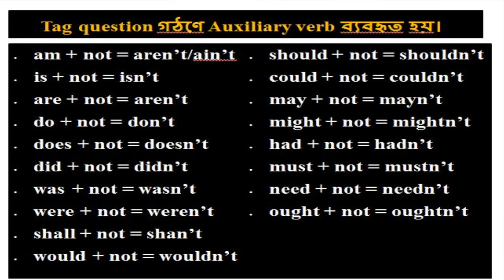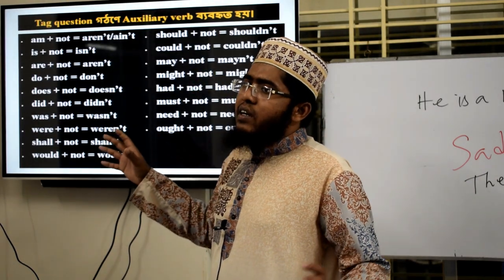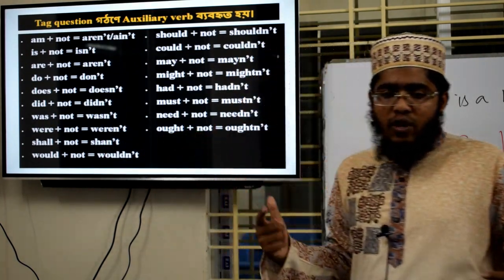Now, here is how to form the contracted negatives for tag questions: am not → aren't/ain't I; is not → isn't; are not → aren't; do not → don't; does not → doesn't; did not → didn't; was not → wasn't; were not → weren't; shall not → shan't; would not → wouldn't; should not → shouldn't; could not → couldn't; may not → mayn't; might not → mightn't; had not → hadn't; must not → mustn't; need not → needn't; ought not → oughtn't. These are the auxiliaries used in tag questions.